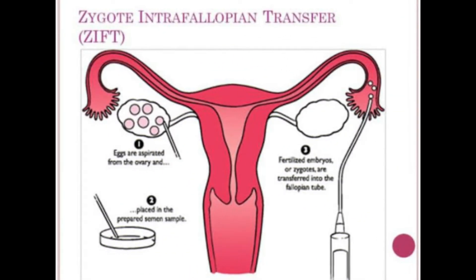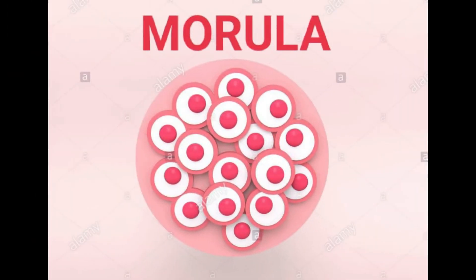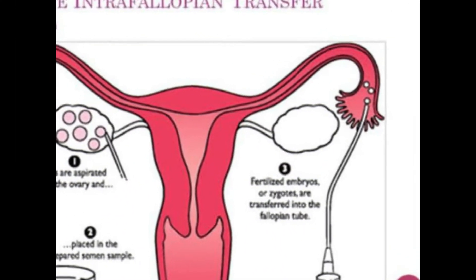ZIFT means zygote intrafallopian transfer — we transfer the zygote into the fallopian tube. In ZIFT, the embryo can have up to 8 blastomeres. ICSI (intracytoplasmic sperm injection) also involves transfer of the embryo into the fallopian tube.